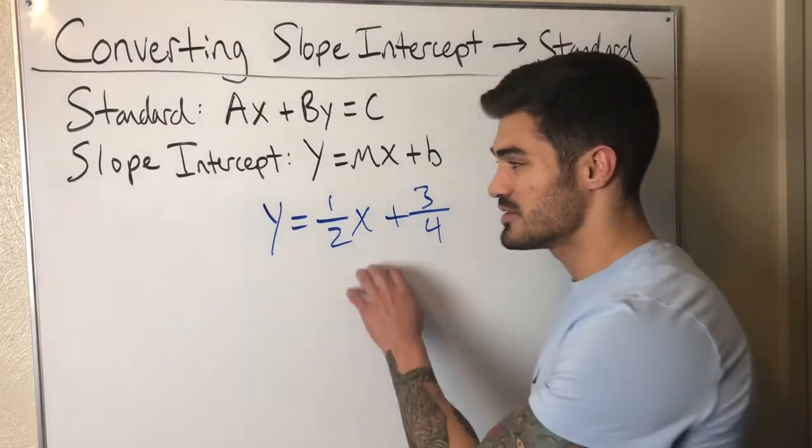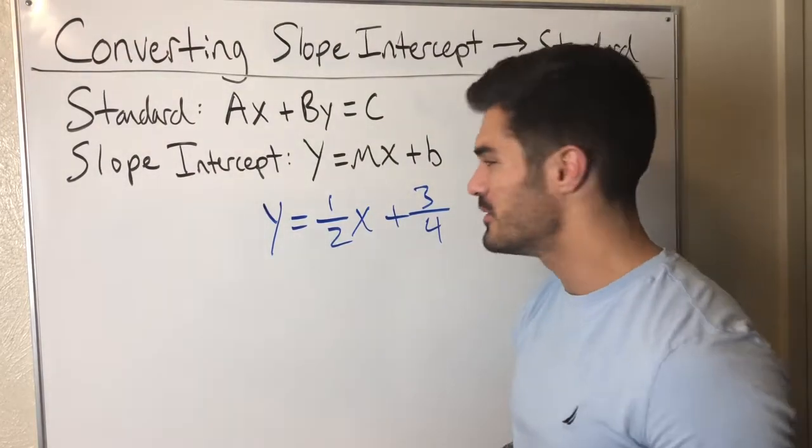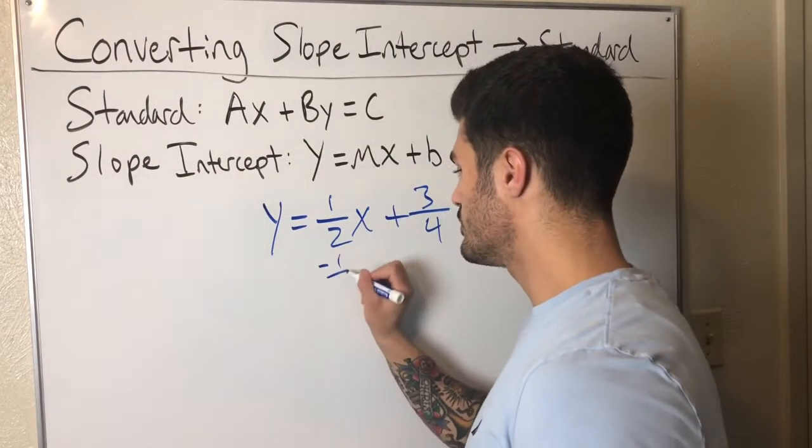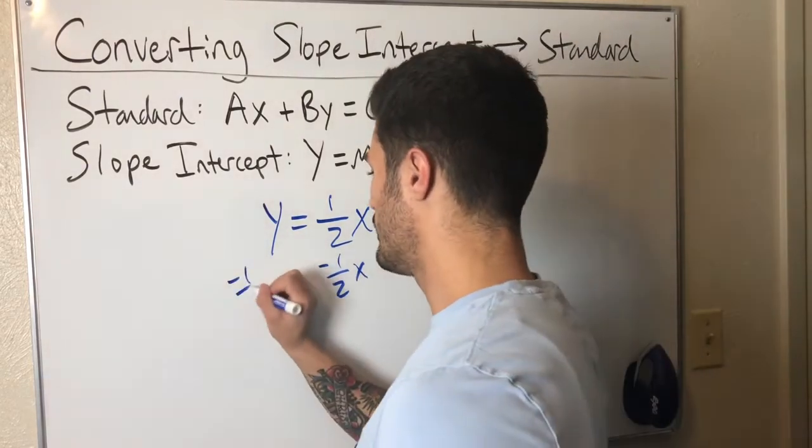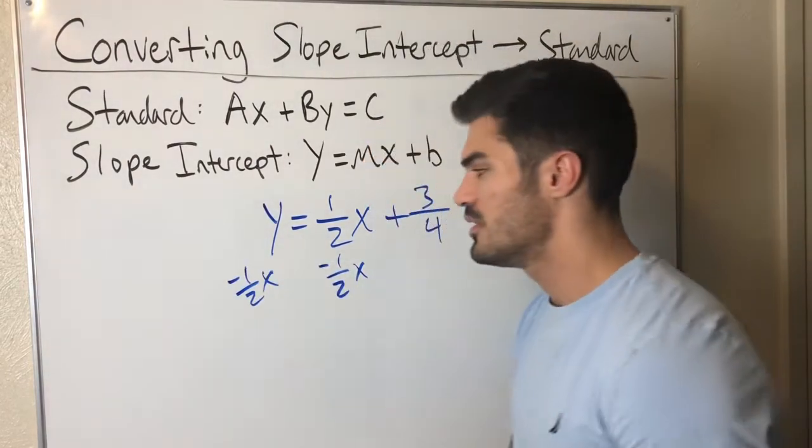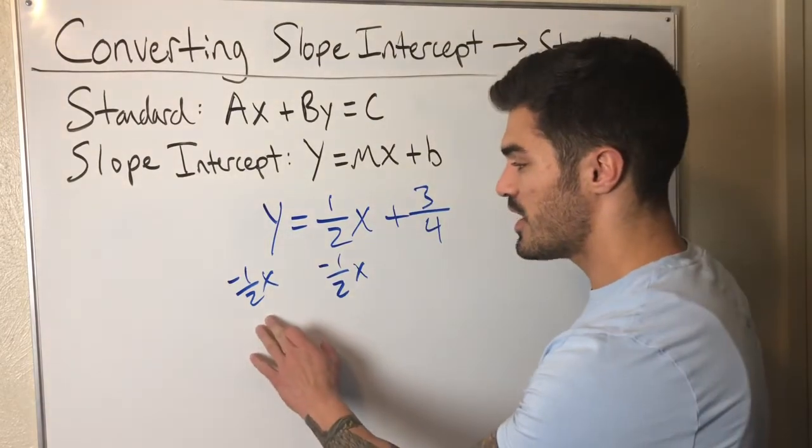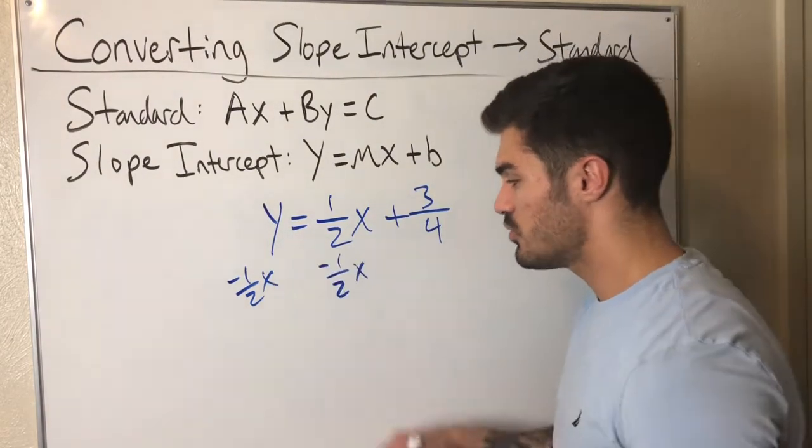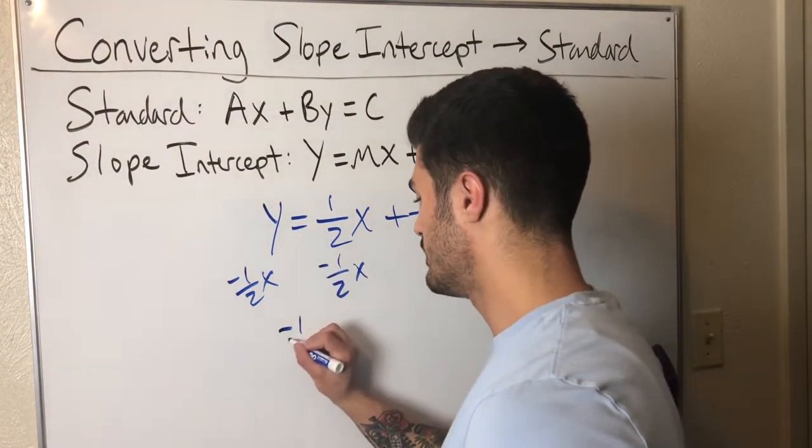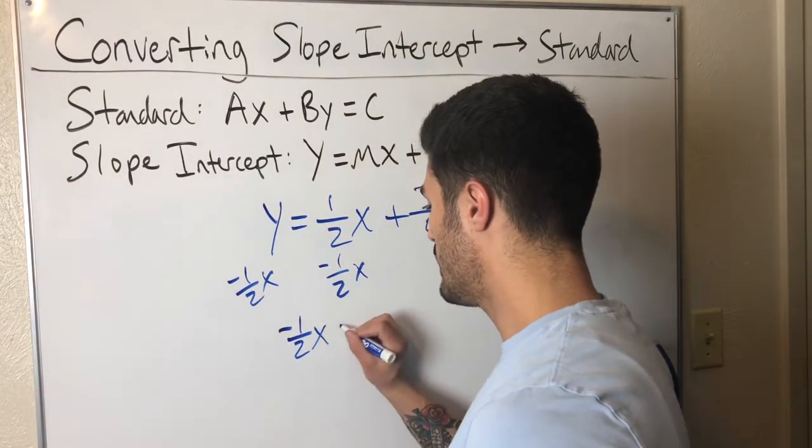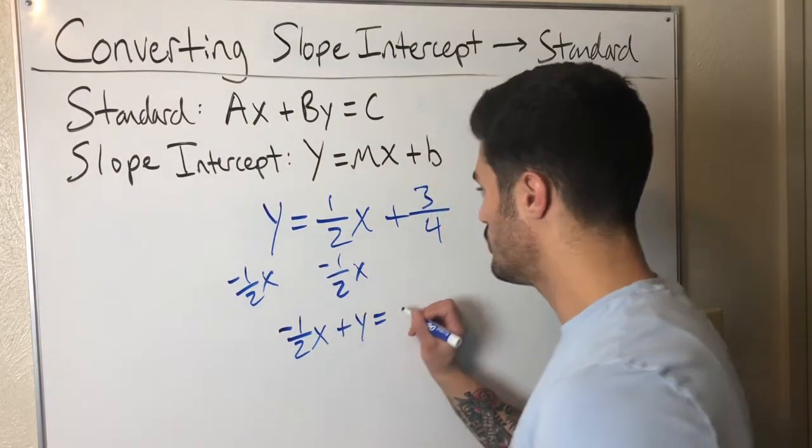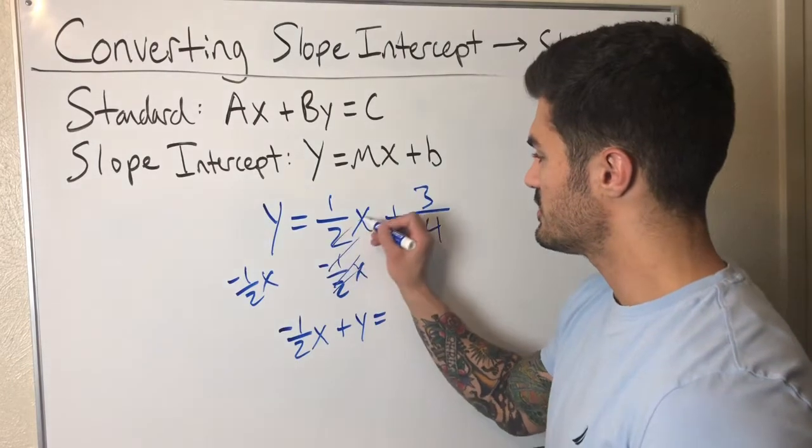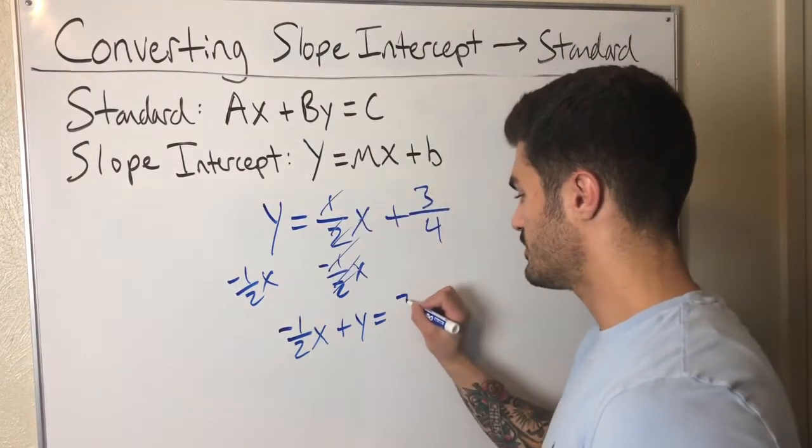Same exact process. Move the x over with the y. So that's the first thing I'm going to do. Subtract one half x from both sides. Now what? What do I have? Minus one half x plus y on the left hand side. Negative one half x plus y equals, let's see, these canceled out. So I got three fourths left on the right side.